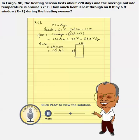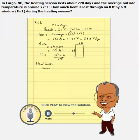We know the temperature difference. We know the heating degree days. We can calculate the heat loss provided we have the R-value. The R-value is also given: 1 foot squared degree Fahrenheit hour over BTU. Heat loss through a season is equal to area times HDD times 24 over R.